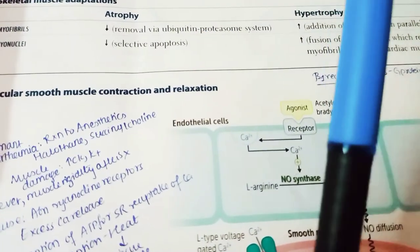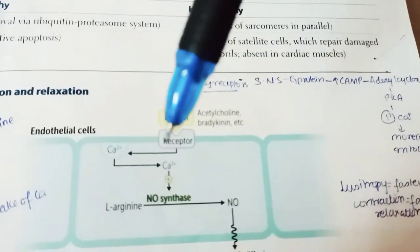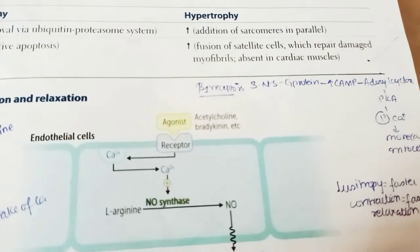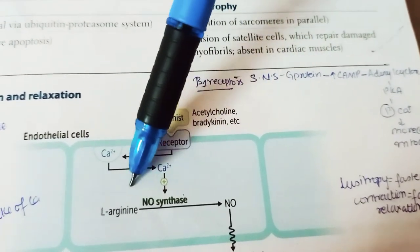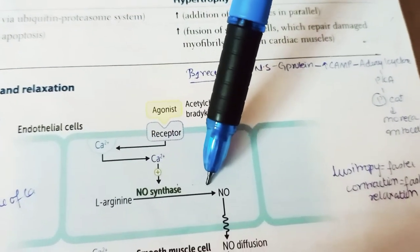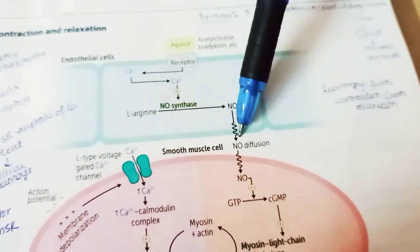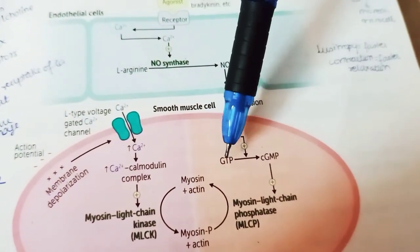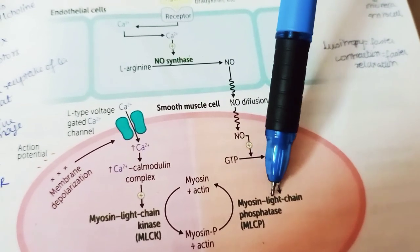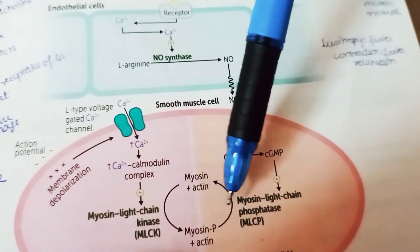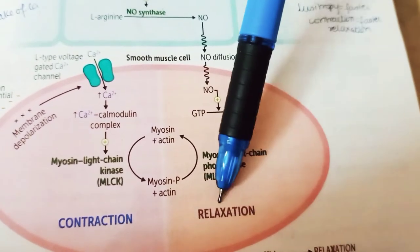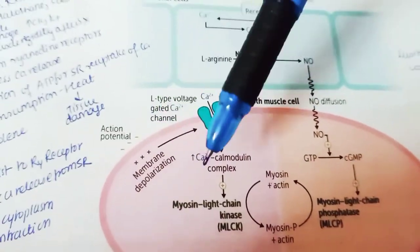Now for vascular smooth muscle contraction and relaxation. In endothelial cells, agonists like acetylcholine and bradykinin act on receptors to release calcium, activating nitric oxide synthase. L-arginine is converted to nitric oxide, which diffuses into smooth muscle cells, converting GTP to cyclic GMP, which activates myosin light chain phosphatase, leading to dephosphorylation of myosin and muscle relaxation.